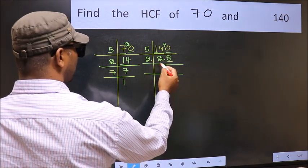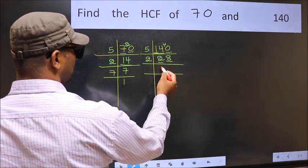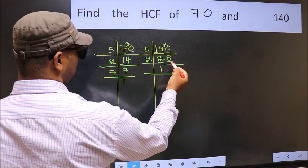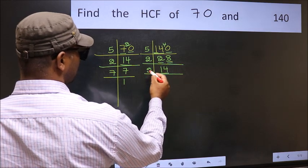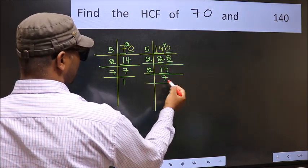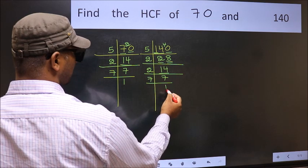Now last digit 8, even, so take 2. First number 2. When do we get 2 in the 2 table? 2 ones 2. The other number 8. When do we get 8 in the 2 table? 2 fours 8. Now 14 is 2 sevens 14. 7 is a prime number, so 7 once 7.